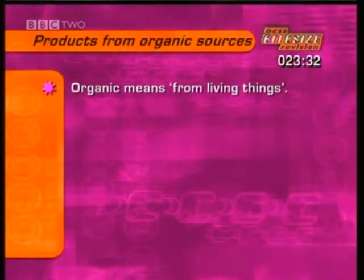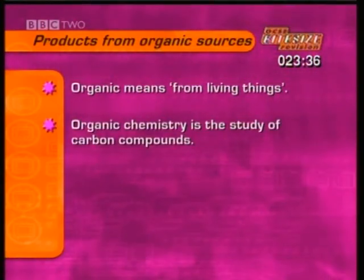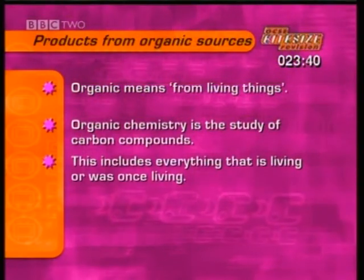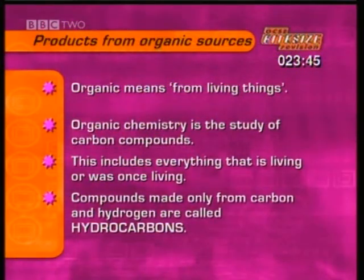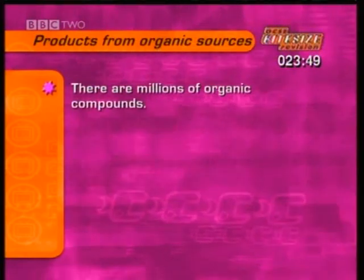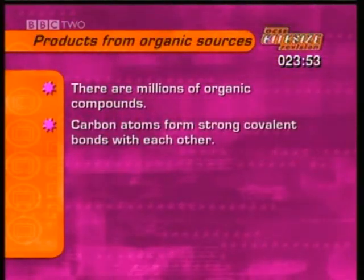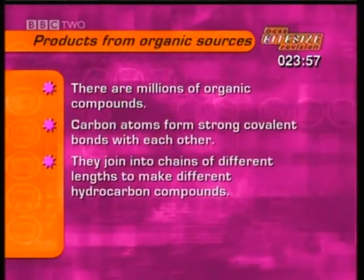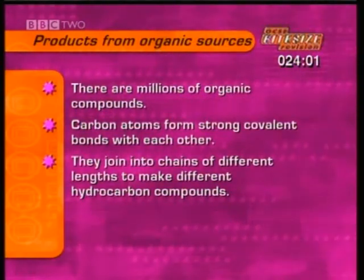Organic means from living things. Organic chemistry is the study of carbon compounds. This includes everything that is living, or was once living. Compounds made from only carbon and hydrogen are called hydrocarbons. In nature, there are millions of organic compounds, because carbon atoms can form strong covalent bonds with each other. They can also join together easily to form chains of different lengths to make many different hydrocarbon compounds.